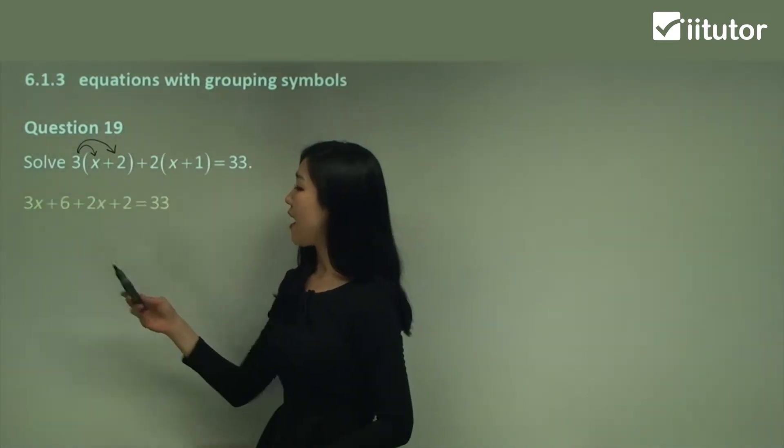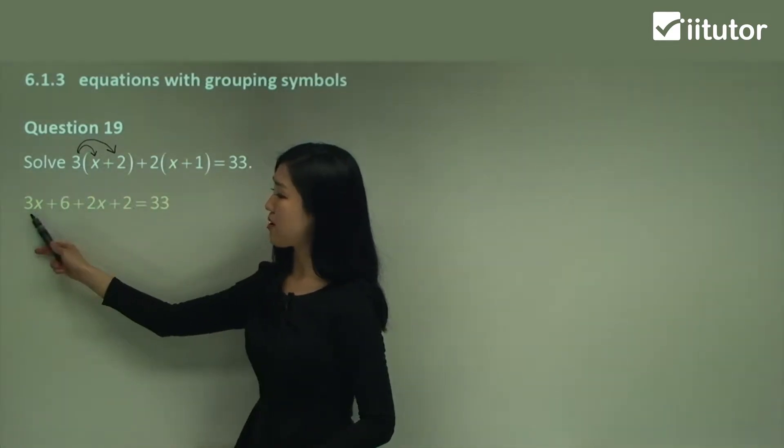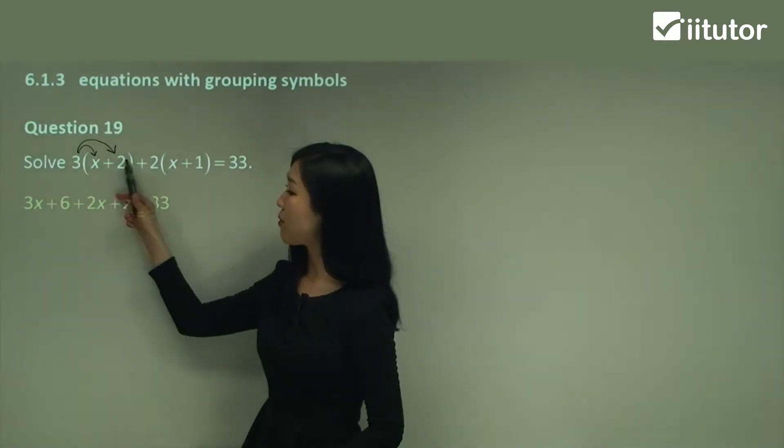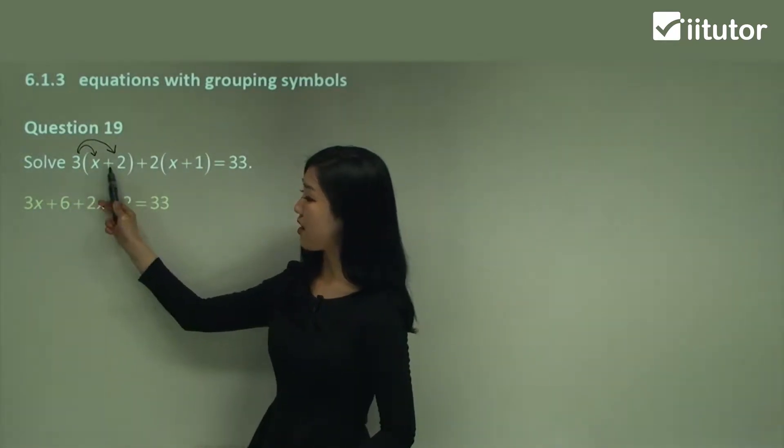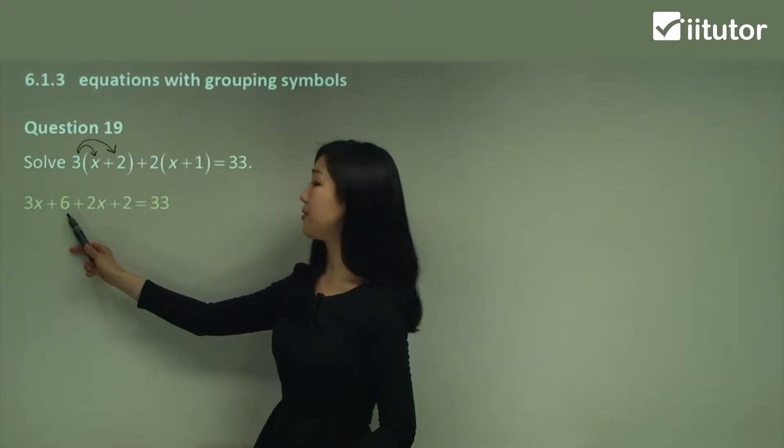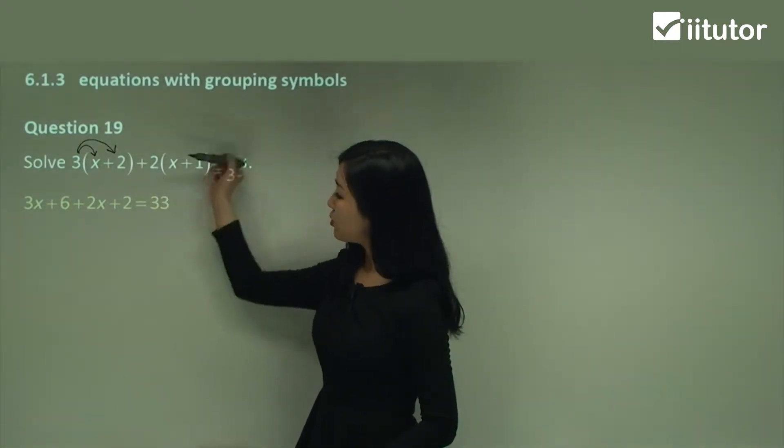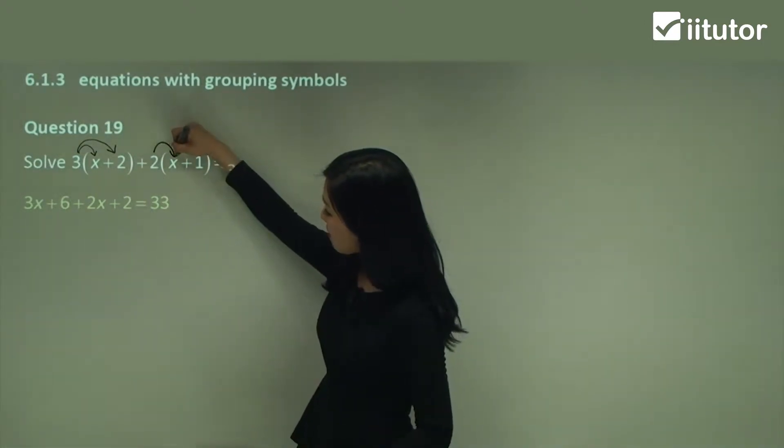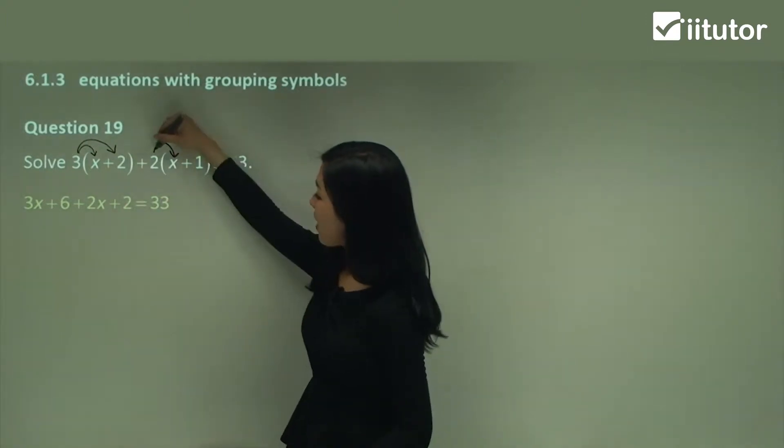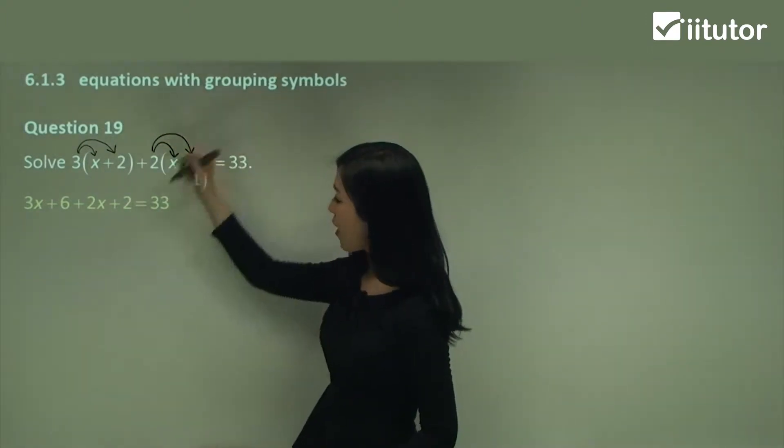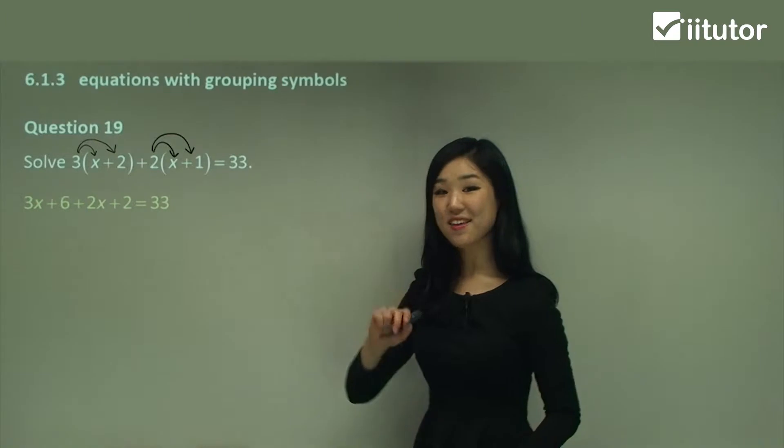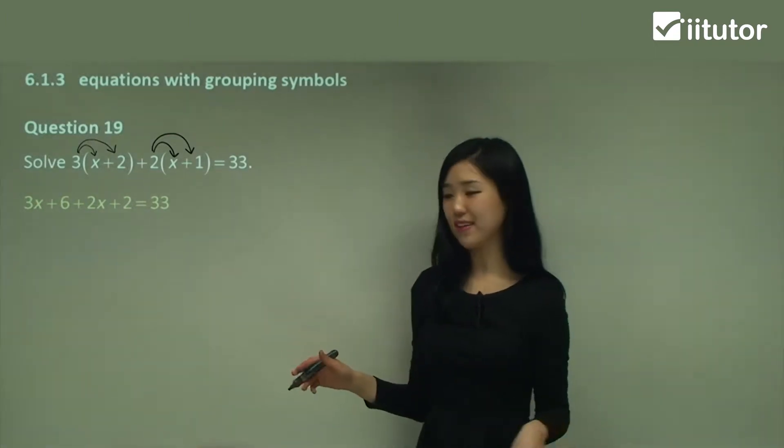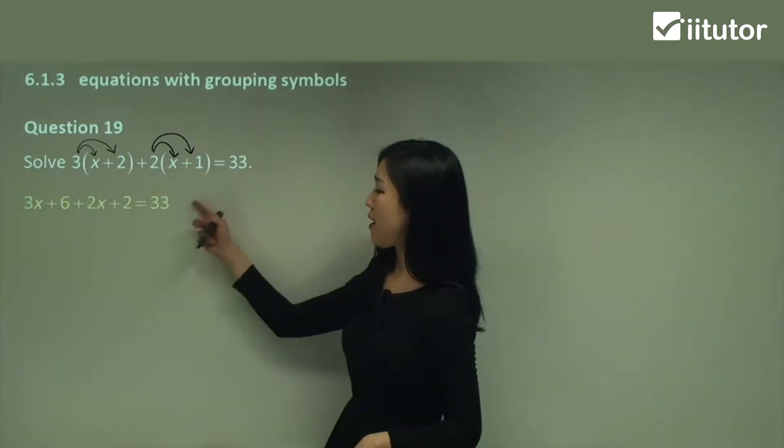Here I'll have 3x because 3 times x is 3x. 3 times 2 is 6 and make sure you watch the signs plus 2, so it must be plus 6. And then here we do the same thing. 2 times x is 2x and 2 times 1 is 2. Now you can see we got rid of all the brackets, all the grouping symbols and the right hand side is just 33.